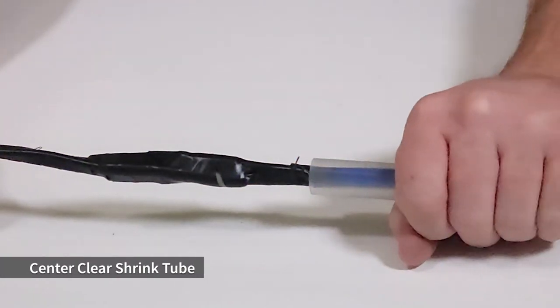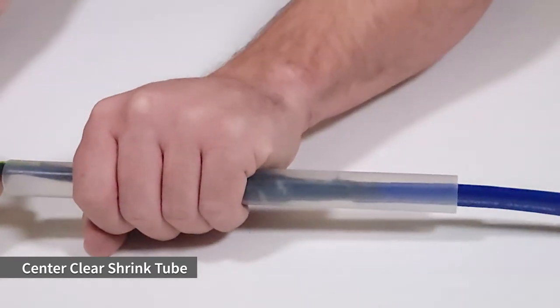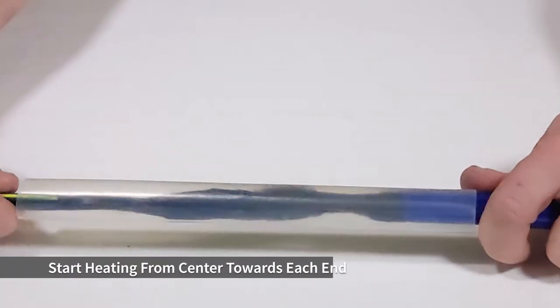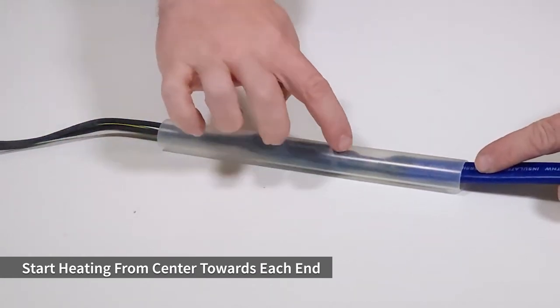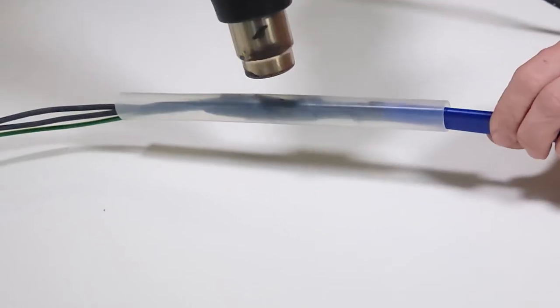Slide and center the clear shrink tube over the splice. Use the heat gun and slowly work from the center outward, rotating the wire to heat evenly until all air pockets are gone.